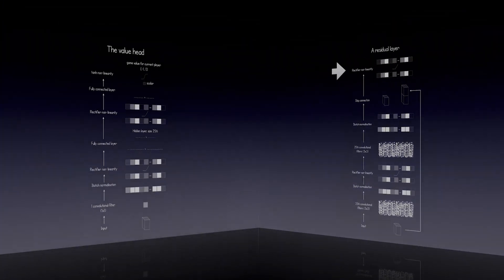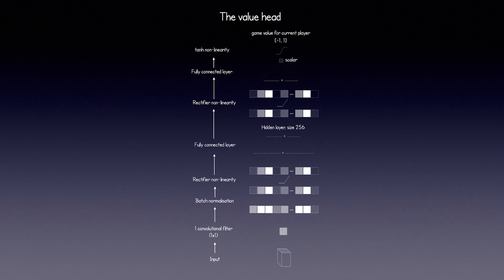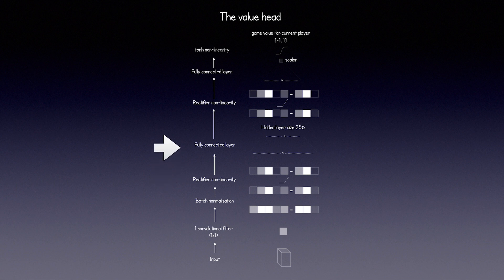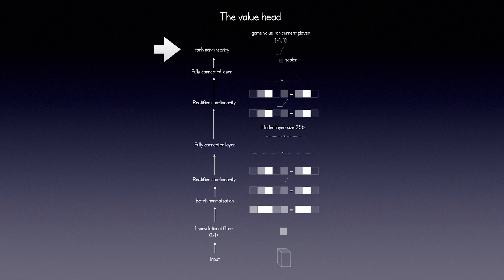Now let's take a look at the value head. Input passes straight to one filter — a 1x1 kernel convolution. We do batch normalization. It goes through a ReLU activation. We have a fully connected layer with 256 hidden neurons. Another ReLU. And a final fully connected layer with a tanh activation, which outputs a value between negative 1 and 1 for the state being queried.